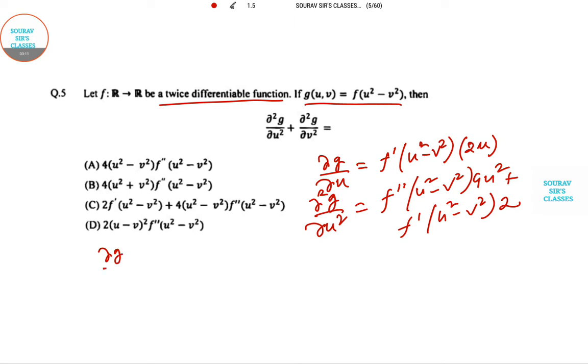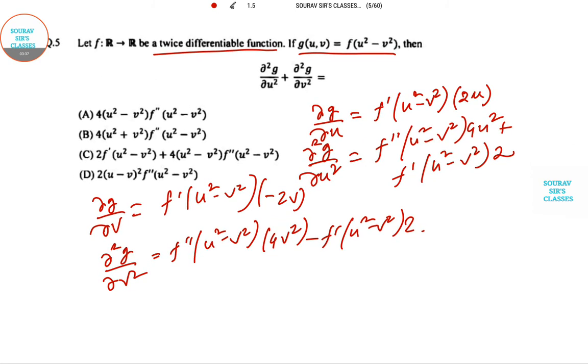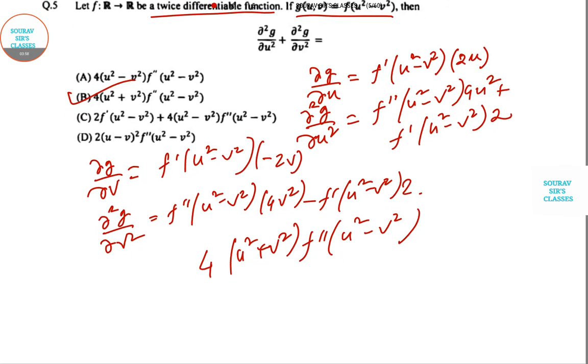Now all you have to do is add these two equations and you can see that this portion is getting cancelled. So we are ending up with 4 and 4. The final answer is 4(u² + v²)f double dash (u² - v²). So option B is the correct answer. We have done till 5.